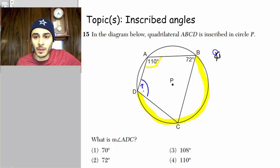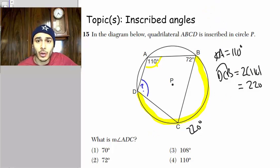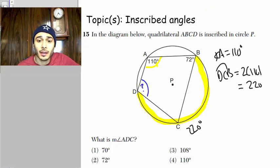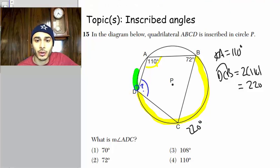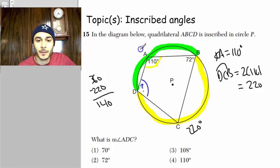So that's 110. And I'm going to use that angle to get the arc DCB. So the arc DCB is going to be twice 110. So that's going to be 220. So that's the measurement of this arc. Then that means the measurement of this arc over here, this piece here, is 360 minus 220. And then that's going to be 140.